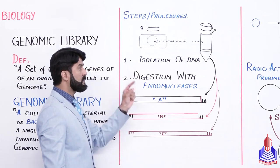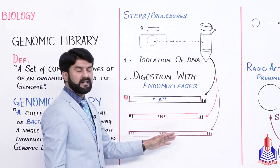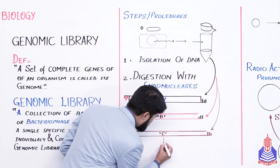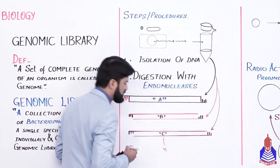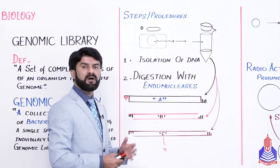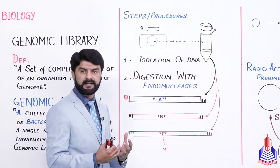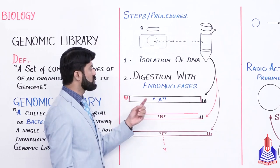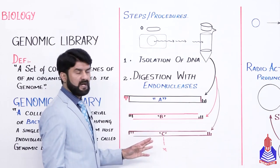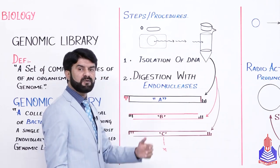ہماری کوشش ہوتی ہے کہ ہم کسی بھی endonuclease کے ساتھ gene کے part کو cut نہ ہونے دیں بلکہ اس کے جو upstream یا downstream areas ہیں وہاں پہ cut لگائیں. Gene درمیان میں سے start ہو رہا ہے اور یہاں ختم ہو رہا ہے، تو ہم اس کے upstream اور downstream areas سے cut کرتے ہیں کیونکہ ایک cut ہوا یا incomplete gene کسی کام کی نہیں. تو میں نے اس particular gene کو disturb کیے بغیر اس کے sticky ends create کرنے ہوتے ہیں. For example میں نے تین different genes isolate کر لیں — gene A, gene B, and gene C.